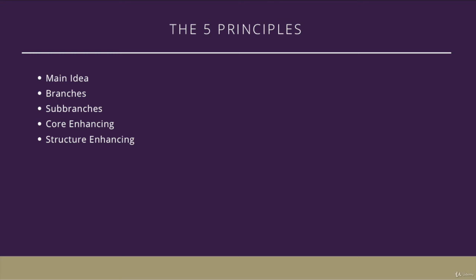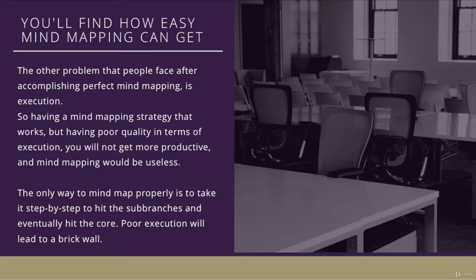Quickly: the main idea is the core idea you start with. The branches are what you brainstorm out of the main idea — different ideas from it. The subbranches are brainstorming the bits and pieces of a branch. So the main idea spawns branches, and those branches spawn subbranches, and so on. Core enhancing is working on the core of the mind map, and structure enhancing is working on the overall structure to make it more effective.